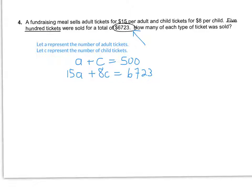I had to really zoom in on my graph to see the intersection point, but I got an intersection point of 389, 111. So A was my X-axis variable and C was my Y-axis variable — or you can use the alphanumeric keyboard to enter the actual letters A and C, just be careful to know which is on the X-axis and which is on the vertical axis. Summarize with your therefore statements: therefore, there were 389 adult tickets sold and 111 children's tickets sold.